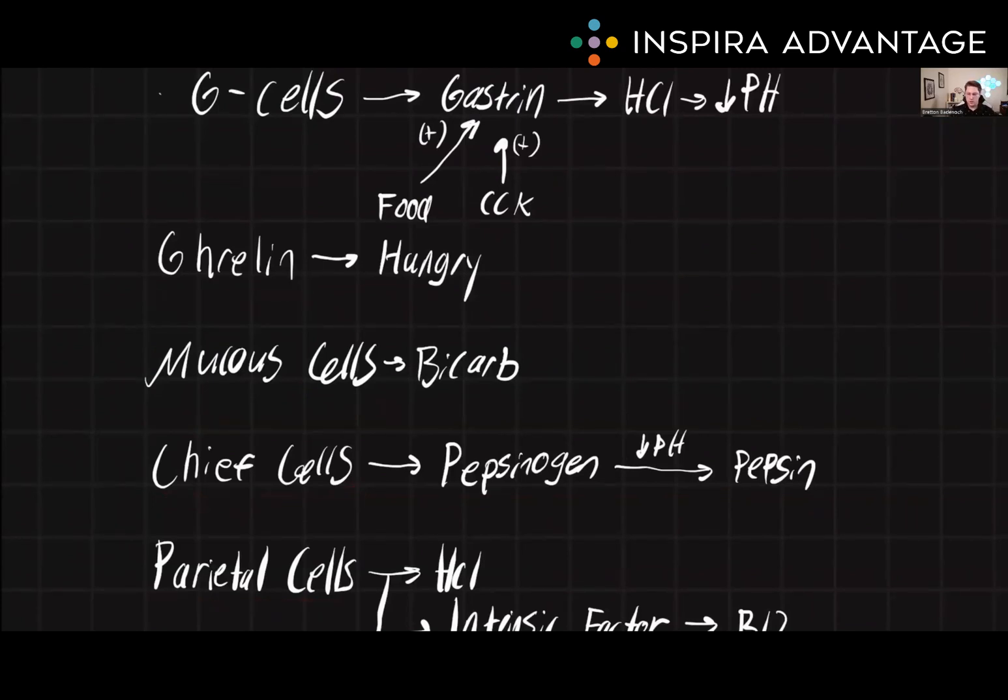Mucus cells are specialized cells that produce and secrete mucus. Mucus acts as a protective barrier for the stomach lining, preventing the acid and enzymes produced by the stomach from causing damage. Mucus also acts as a lubricant, helping to mix and move food through the stomach.